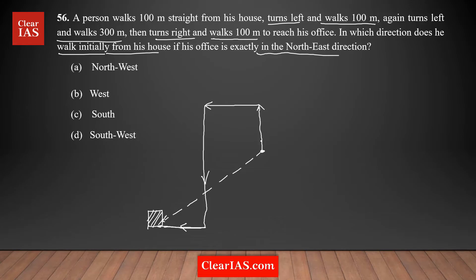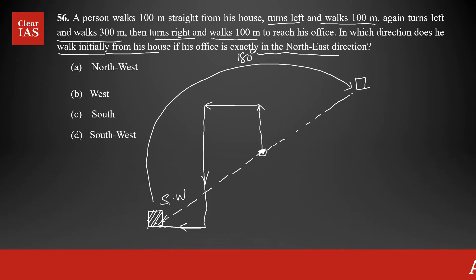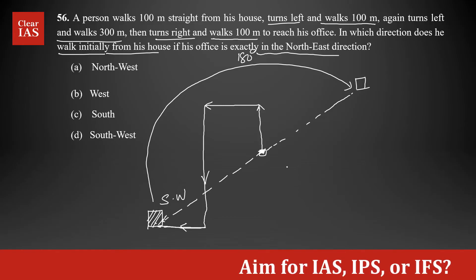Here in this case, if he's walking initially from his house in the north direction, his office is facing in the south-west direction. But actually, the scenario is his office is exactly in the northeast direction. Northeast direction means, if this is his home, northeast is going to be somewhere here, so his office has to be here somewhere. That means our initial assumption was wrong. South-west and north-east are opposite directions — that's 180 degrees.